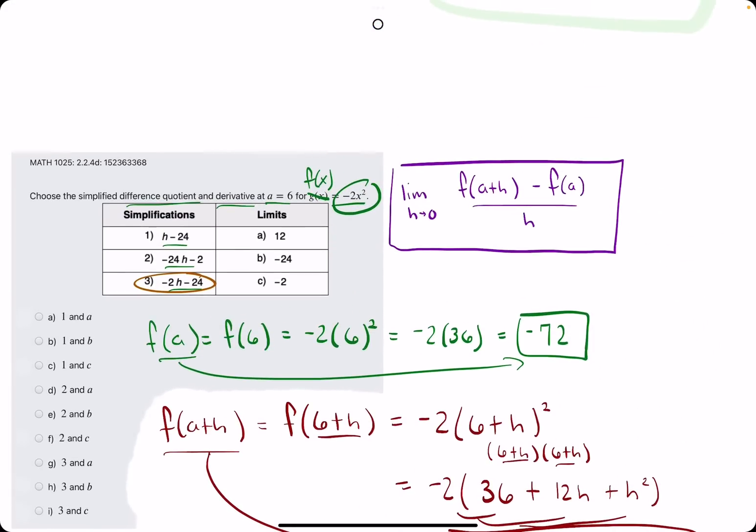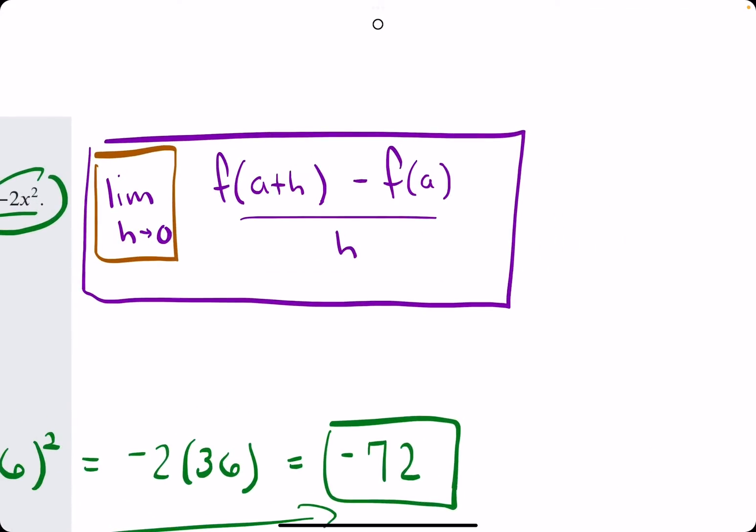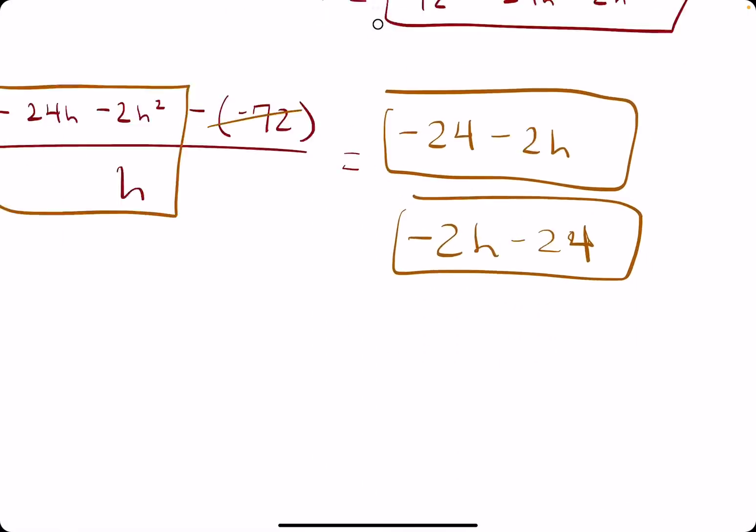And then, really, to find the derivative, that's where this limit comes into play. So the only difference is, or really the only last step is to plug in 0 for h. So when we look at this,